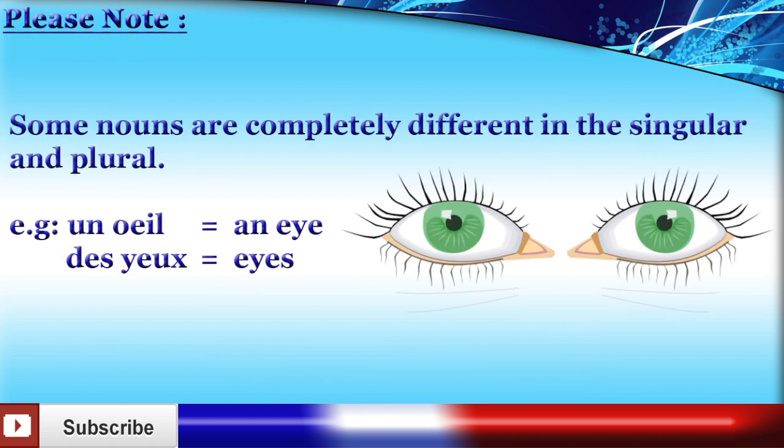Please note that some nouns are completely different in the singular and plural. For example, un œil, an eye, des yeux, eyes.